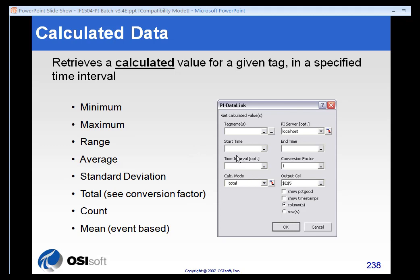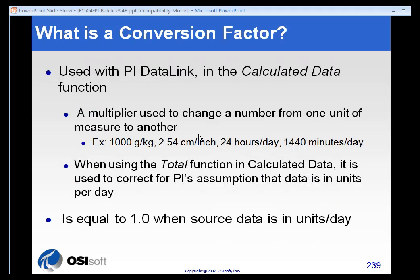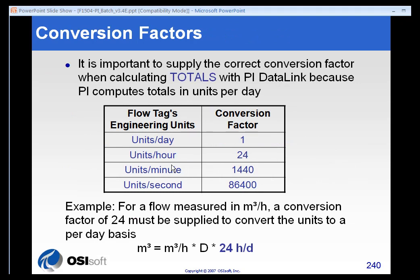Most of the time with batch data, the calculated data function is used to retrieve the start time and the end time. You will see something called a conversion factor, which is only used when dealing with totals, because the PI Server does not keep unit of measure. We assume units per day. So if you're doing a totalization and your device is measuring gallons per minute or cubic meters per minute, you'll need to use a conversion factor of 1440, because your units are units per minute. If you are measuring in units per day, then your conversion factor remains one.